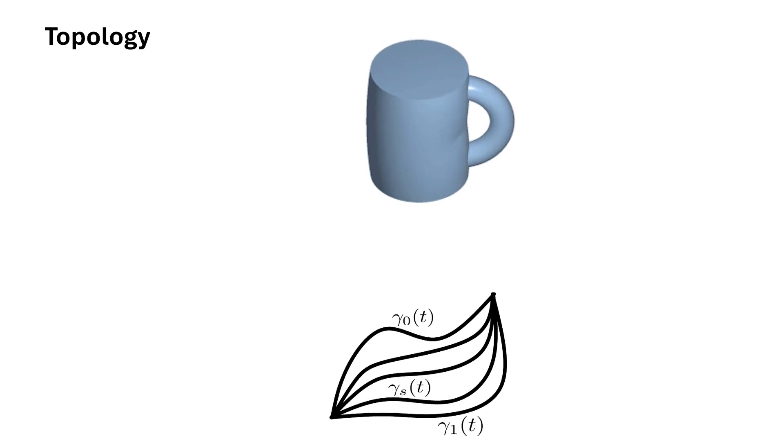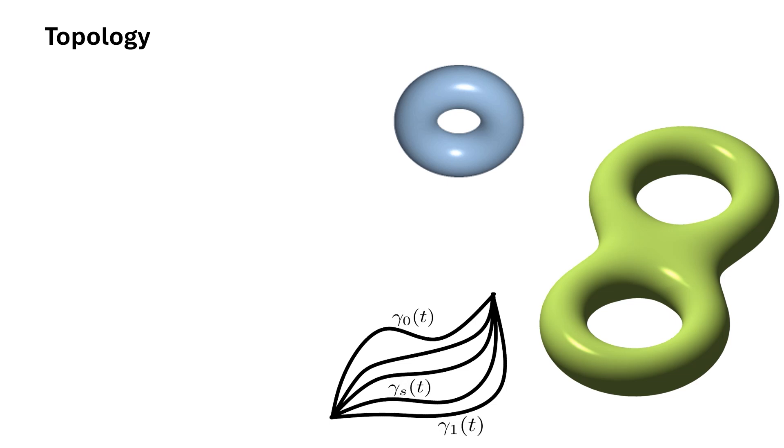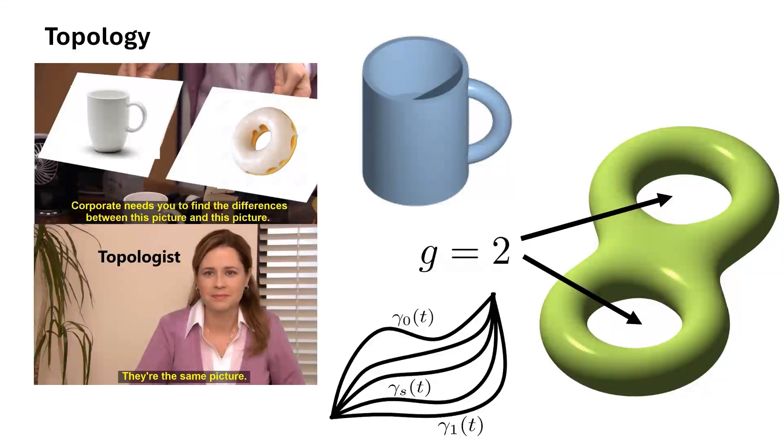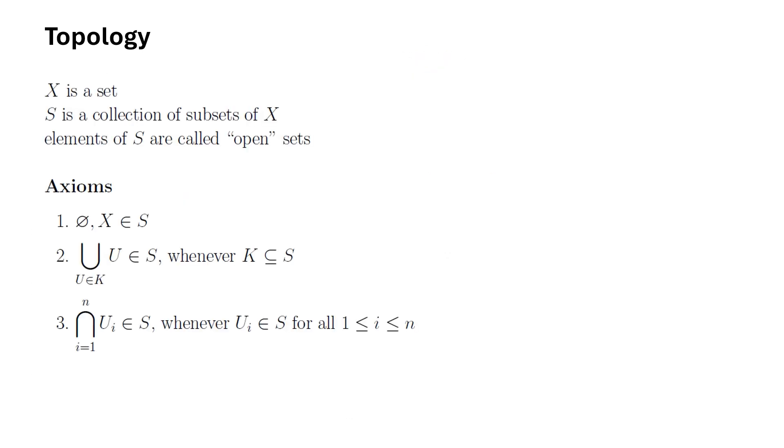Topology. Topology is the study of the properties of a shape that are invariant under continuous deformation. For example, how many holes a surface has is such a property called the genus of the surface. This is why a coffee mug and a donut are the same space topologically, since they each only have one hole and can be continuously deformed into each other. Topology studies these properties by considering an axiomatic structure on certain sets that are referred to as open sets.